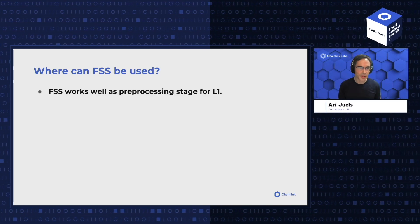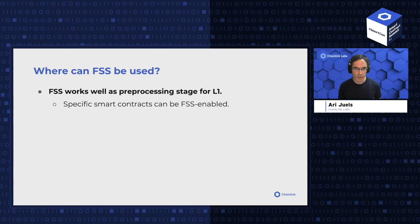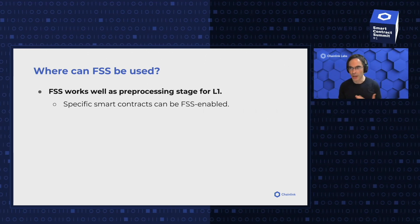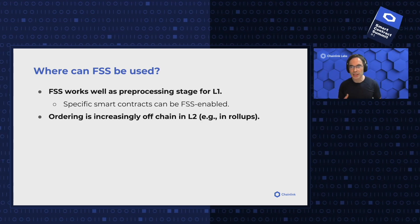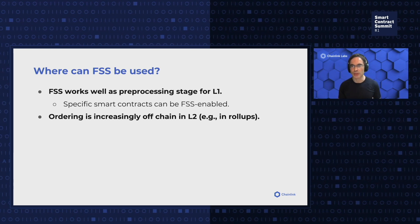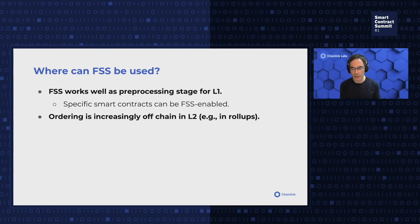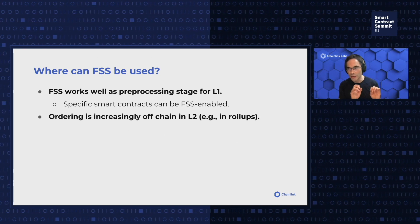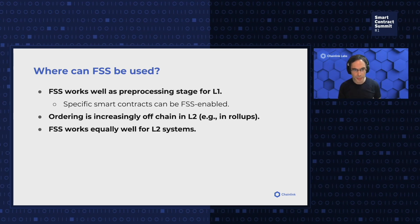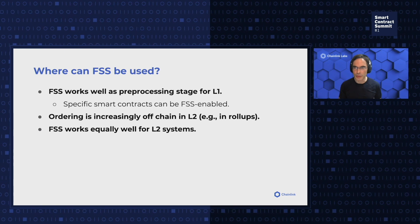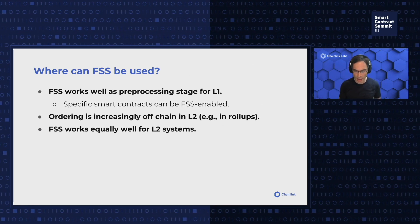FSS can be used in a couple of different settings. It can be used as a pre-processing stage for L1 — for example, you can associate particular smart contracts with FSS. Ordering is increasingly taking place off-chain in L2 systems, and with the rise of L2 systems, the locus of transaction ordering is shifting away from miners to L2 systems like rollups. FSS works equally well for L2 systems — L2 systems include transaction sequencers, and those transaction sequencers can be FSS-enabled.